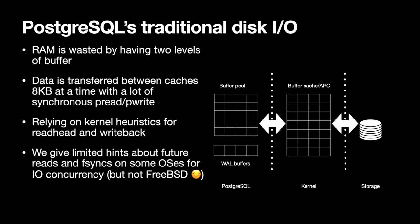The first thing to talk about is how Postgres works today. Basically it's using a bunch of 1980s system calls to read and write files, and it does so eight kilobytes at a time, finishing up with double buffering. A large amount of your system's RAM is used by the kernel for its buffer cache — or the ARC if you're using ZFS — and then there's Postgres's own buffer pool, which works similarly. Both layers are trying to cache frequently accessed data.